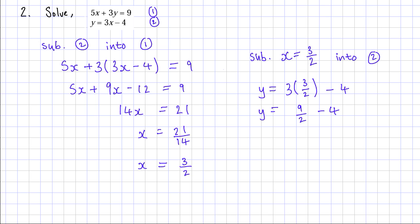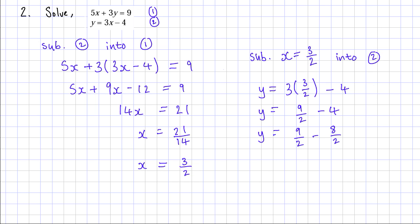I have a fraction and need to subtract 4, so I'll write 4 as a fraction over 2, which is 8 over 2 since 8 divided by 2 equals 4. So y equals 9 over 2 minus 8 over 2, which equals 1 over 2. My final values are x equals 3 over 2 (or 1 and a half) and y equals a half.